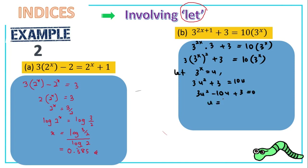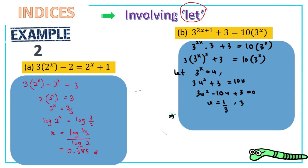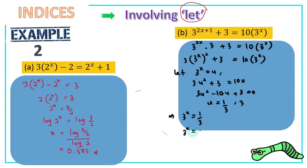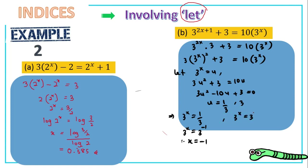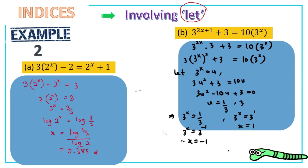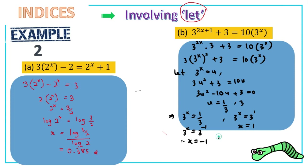Solving gives u = 1/3 or u = 3. Since we want x: if 3^x = 1/3 = 3^(−1), then x = −1. If 3^x = 3 = 3^1, then x = 1. After rechecking with a calculator, both x = 1 and x = −1 are accepted.